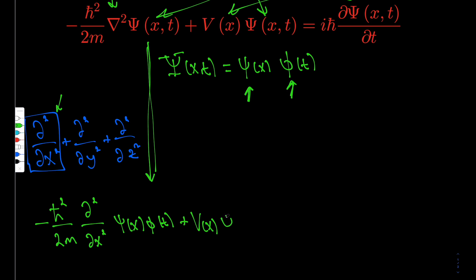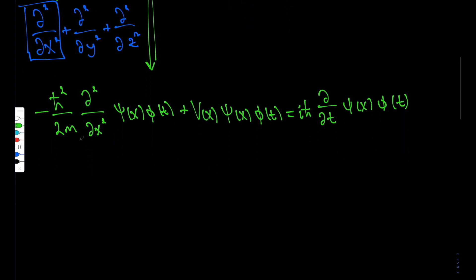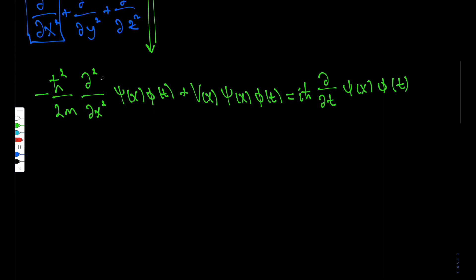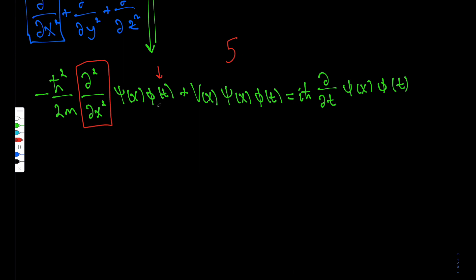We have phi and we'll leave the notation for now until we apply the derivatives. The potential is now only a function of x by assumption, giving V(x)·ψ(x)·φ(t) on the left. On the right we have i·h-bar times ∂/∂t of ψ(x)·φ(t). For those who haven't taken Calc 3: when we take a partial derivative with respect to x, we hold all other variables constant — so t is treated like a constant, just scaling psi. Similarly, when differentiating with respect to t, we hold x constant.